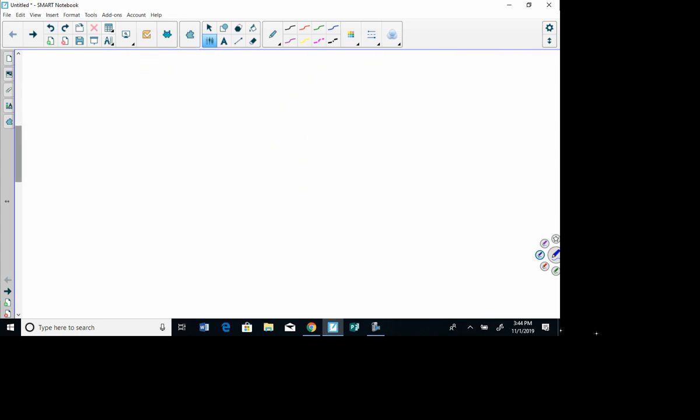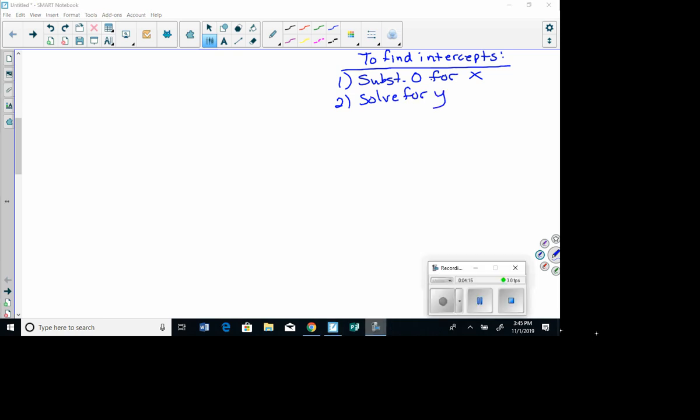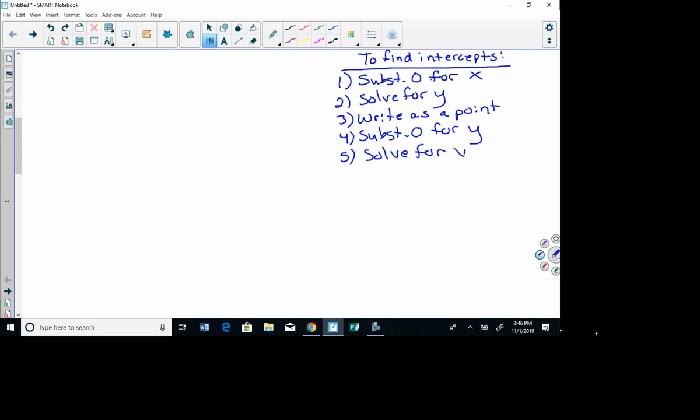Now, when we notice that when we have an intercept, one of the two coordinates is 0, either the x-coordinate or the y-coordinate. So here are our steps for finding the intercepts. To find intercepts, if we're just given an equation, first of all, we substitute 0 for x. Then we solve for y. And then we write that as a point. Then number 4, substitute 0 for y. Solve for x. And then write as a point.